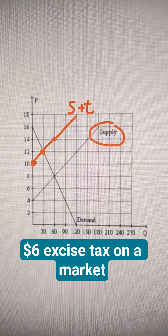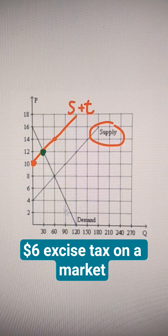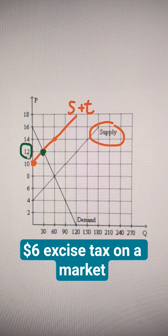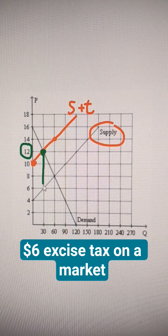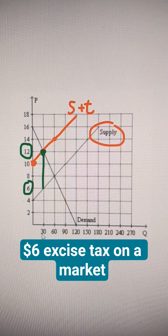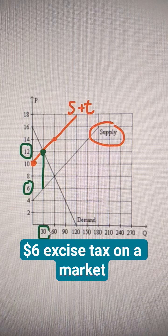Then we find the price right here where it hits the demand. This is the price that the buyers pay. Buyers pay $12. The seller has to pay six of that to the government, so they only get to keep six. How many units are we going to buy at that quantity? That's going to be 30.